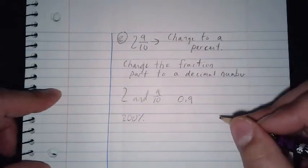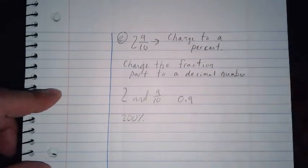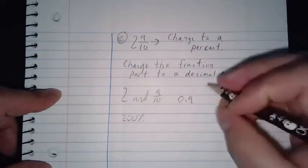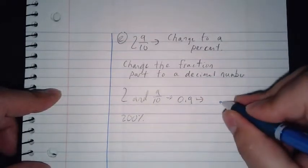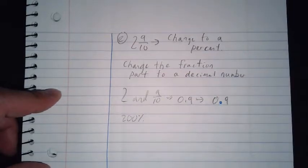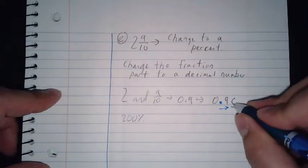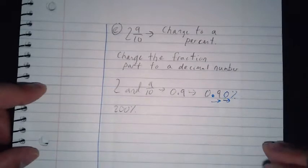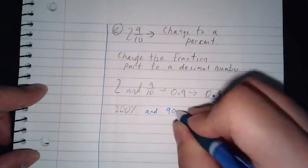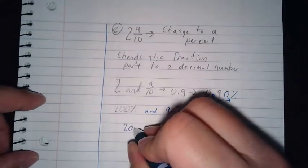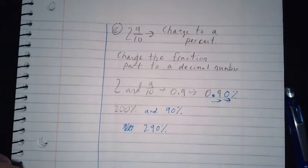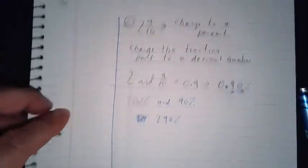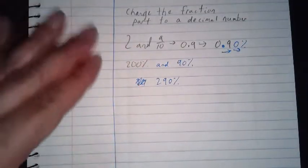Then change that decimal to a percent — go backwards, move the decimal point two spaces to the right. So you get two hundred and ninety percent — two hundred ninety percent. If you have questions, make sure you write them on the side. There's more than one way to do this; if you have your own way, try it.